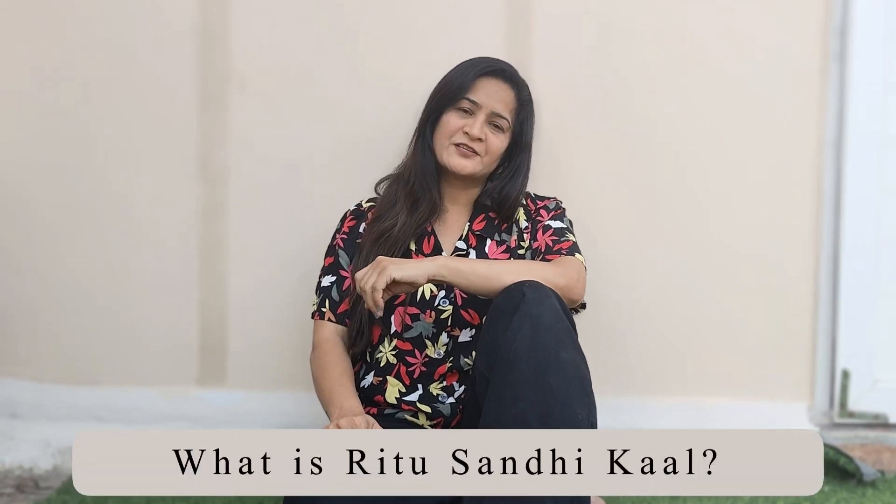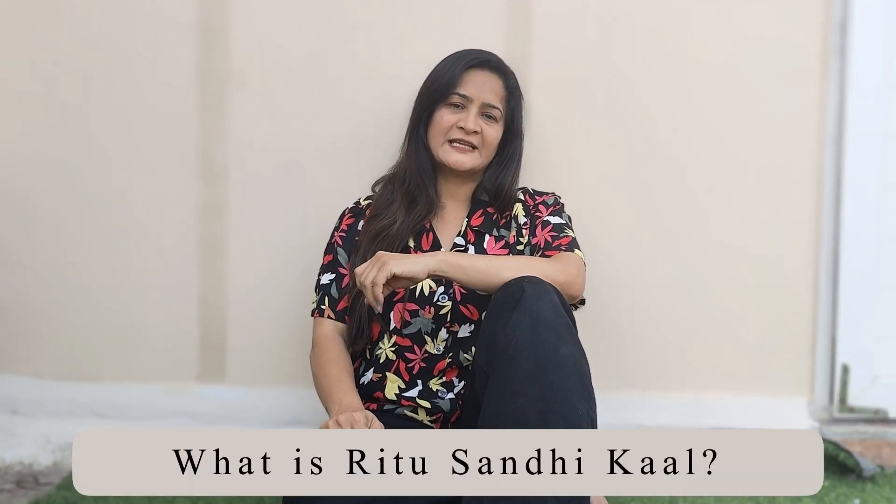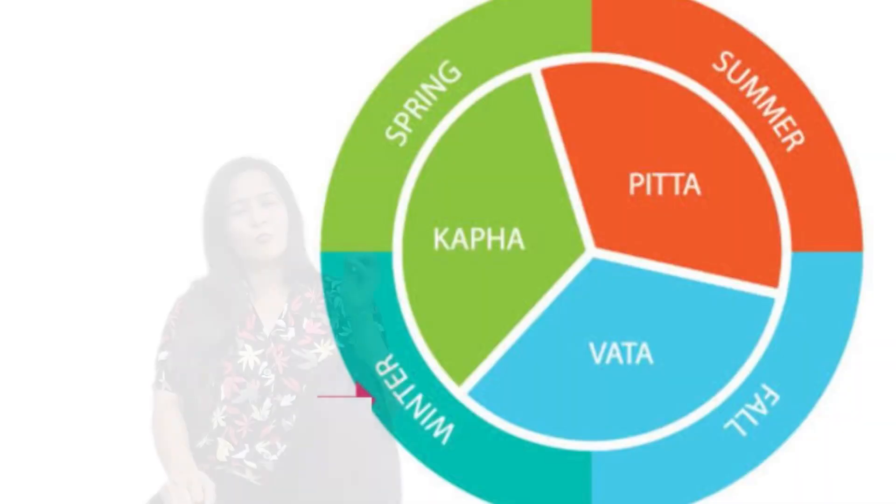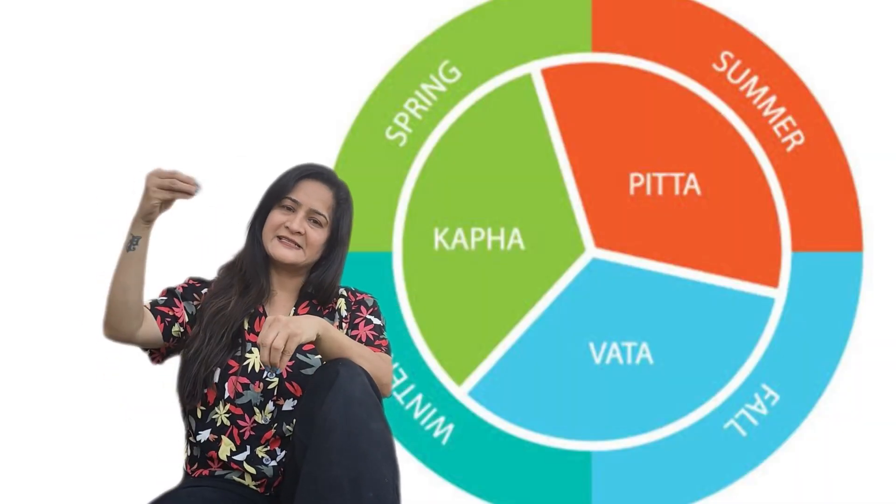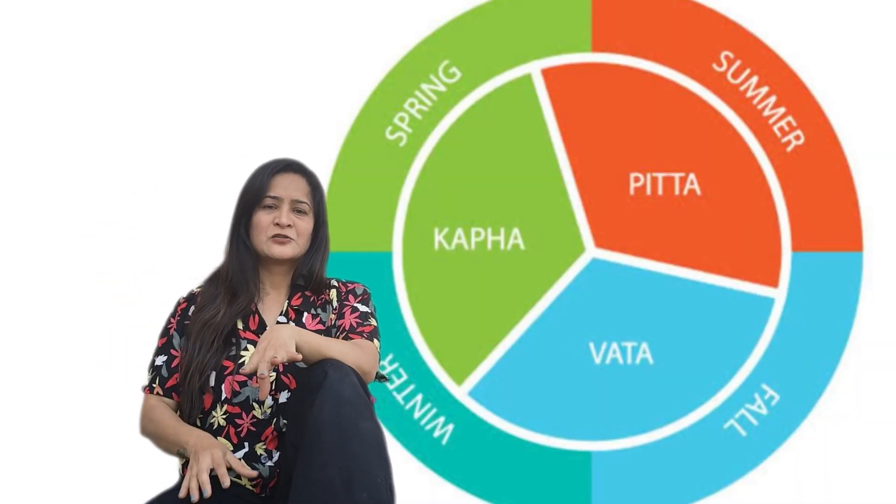Let's understand what is Ritu Sandhikaala. Ritu Sandhikaala is those days where one season ends and the second season starts. If we have one season of four months, after about three and a half months, the last seven days of that first season and the first seven days of the next season — these two weeks, these 15 days, are called Ritu Sandhikaala.